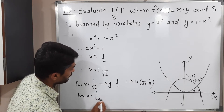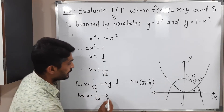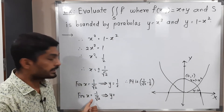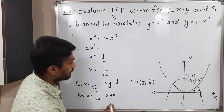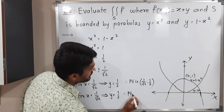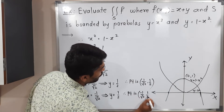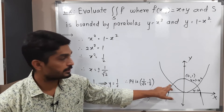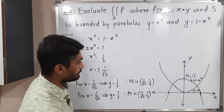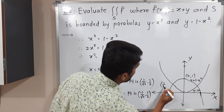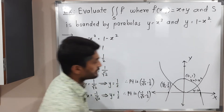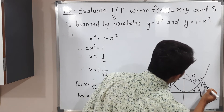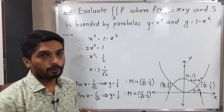For x = −1/√2, putting into y = x² gives y = 1/2 again, since squaring removes the negative. So the second point of intersection is (−1/√2, 1/2). These are the two intersection points of the two parabolas, one on the negative side and one on the positive side of the x-axis.